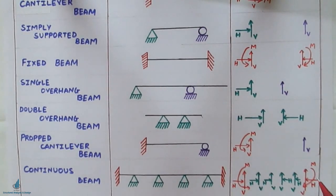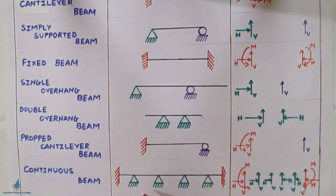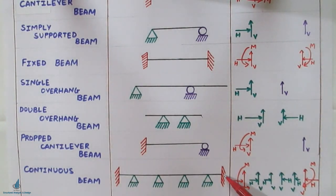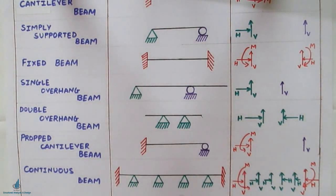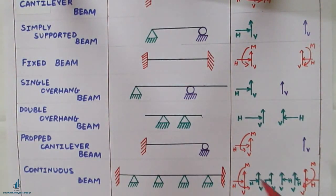The last type is the continuous beam, which has two or more spans. If it is a single span, it becomes simply supported or fixed. If it has two or more spans, we consider it a continuous beam. Here, both ends are shown as fixed with hinges in between, though the end supports may be of any type. Most of the time, a continuous beam is an indeterminate structure.